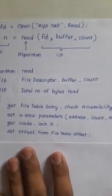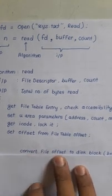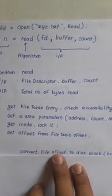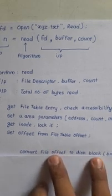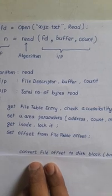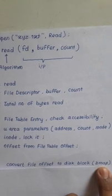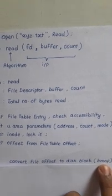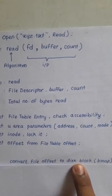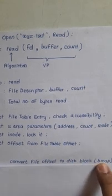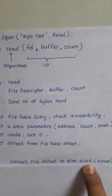Now I need to convert that file offset because this offset is a logical offset. I need to convert it to a physical one. The kernel uses the bmap algorithm to translate this logical file offset to a disk block. We can have a separate video on the bmap algorithm and how it converts the file offset to the disk block.